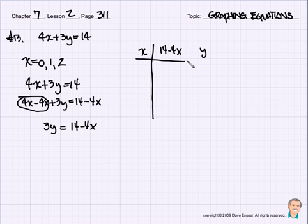So here we go. I'm going to make my table. And the first thing I'm going to do is I'm going to make x equals 0, I'm going to make x equals 1, I'm going to make x equals 2. So I have 14 minus 4 times 0. So this looks like this turns out to be just 14 minus 0, which would be 14. So this would be 3y right here. So I've got the 3y, the 14 minus 4x, and the x. So I have a 14 here.